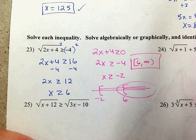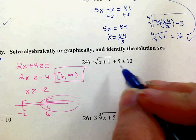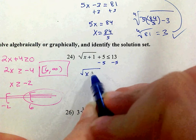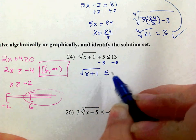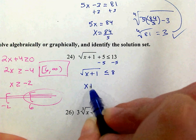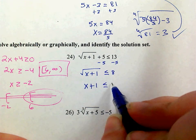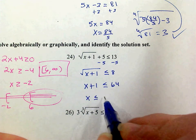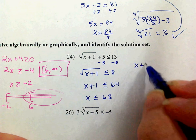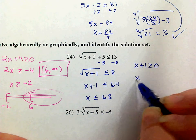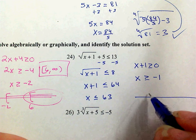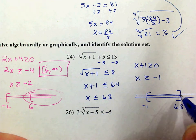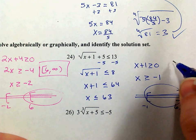On this one, the first thing I want to do is subtract the 5 from both sides. So the square root of x plus 1 is less than or equal to 8. Then I'm going to square both sides: x plus 1 is less than or equal to 64, so x is less than or equal to 63. But I also know x plus 1 needs to be greater than or equal to 0, meaning x is greater than or equal to negative 1. So my answer is from negative 1 to 63.